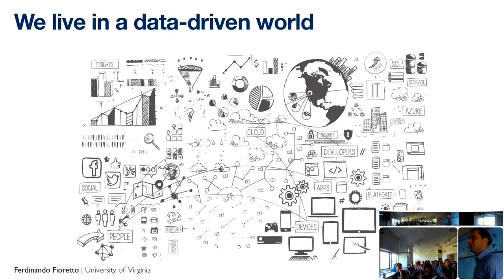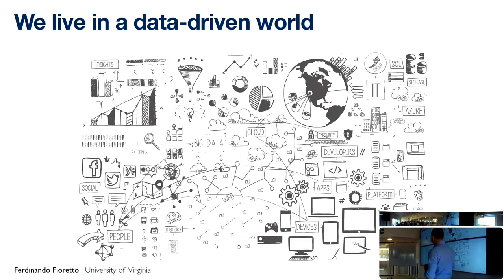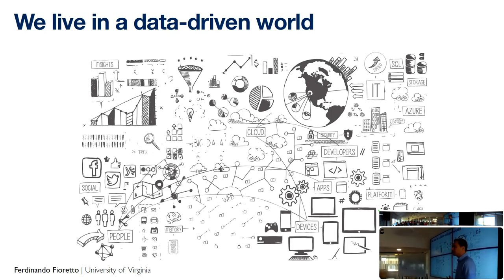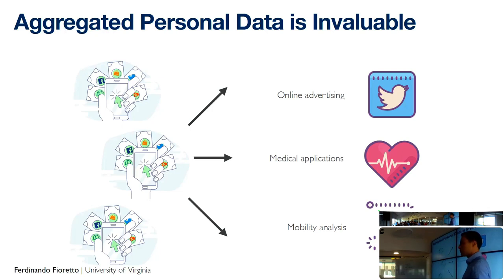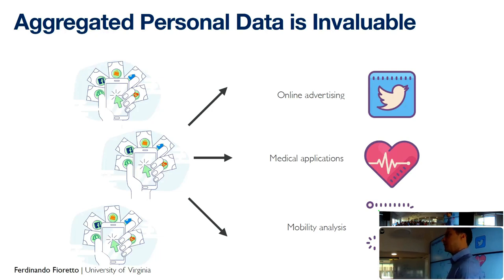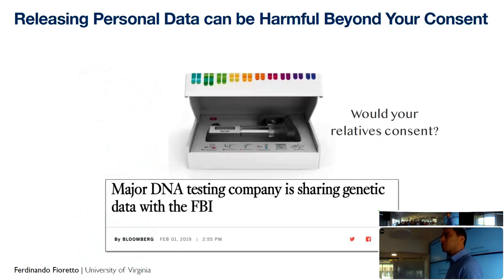We all acknowledge that data is really the new oil. We live in a data-driven world. Data is aggregated from many different sources and is useful for constructing a variety of products serving purposes such as online advertisements, medical applications, and mobility analysis. These products serve companies and industry, as well as benefiting end users. There is this double interest in data acquisition and data release. But releasing personal data, even if aggregated, might incur some privacy risks.